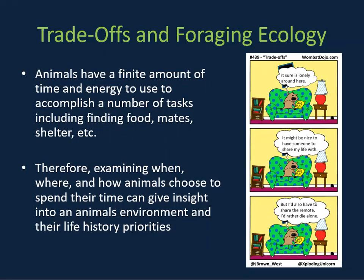Today we will be talking about trade-offs and foraging in ecology. Animals have a finite amount of time and energy to use to accomplish a number of tasks, including finding food, mates, and shelter. Therefore, examining when, where, and how animals choose to spend their time can give insights into an animal's environment and their life history priorities.